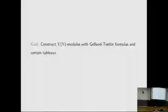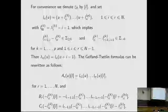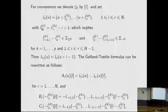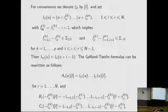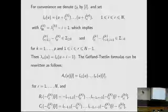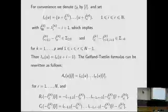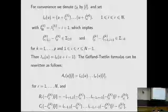Our goal is to construct Yangian modules with Gelfand-Zeitlin formulas and certain Gelfand-Zeitlin tableaux. We introduce polynomial L_{ri}. For convenience, we denote K_c(lambda) by L, and L_{Ni} equals lambda_i minus i plus 1. This L satisfies the betweenness condition, and we have a relation between L and lambda. We can rewrite the Gelfand-Zeitlin formula in terms of L.